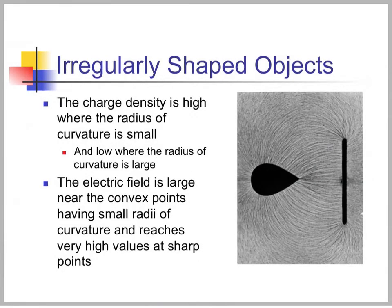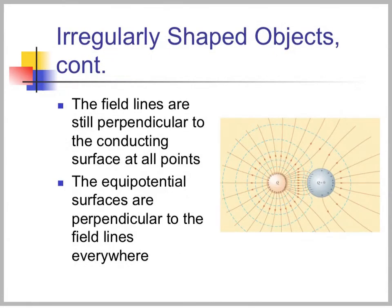For an irregularly shaped object, the charge density is highest where the radius of curvature is smallest and low where the radius of curvature is large. The electric field is large near convex points with small radius of curvature and reaches very high values at sharp points. The field lines are still perpendicular to the conducting surface at all points, and the equipotential surfaces are perpendicular to the fields everywhere.